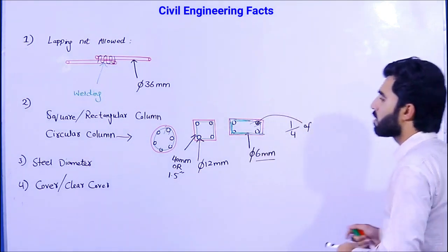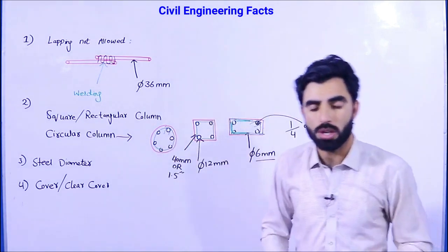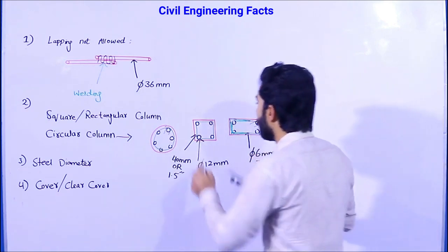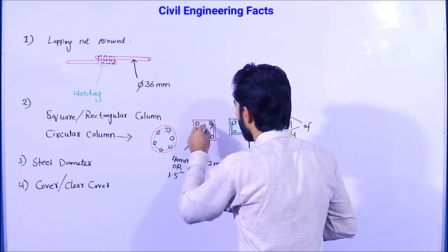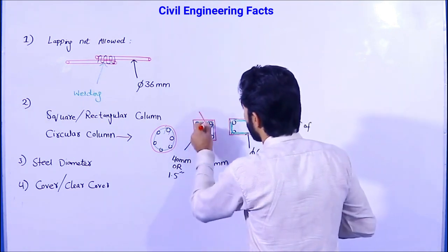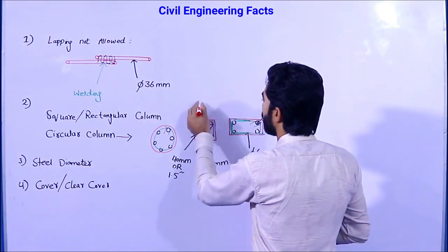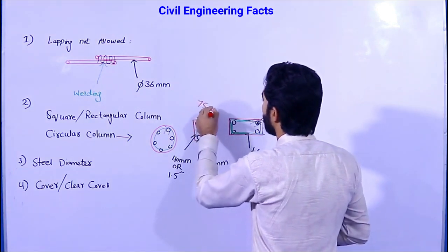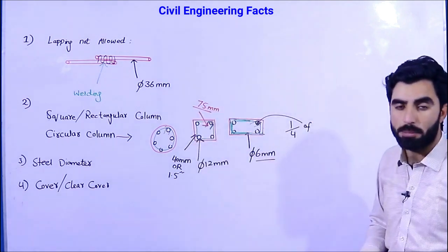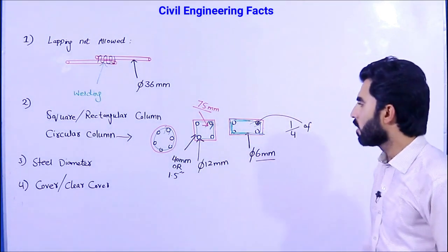Hooks are very important, whether for a circular, square, or rectangular column. The length of the hooks should not be less than 3 inches, or 75 mm. It must be at least 75 mm — not less than 75 mm — for all column types: rectangular, square, and circular.